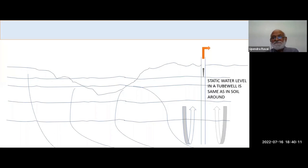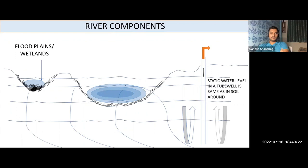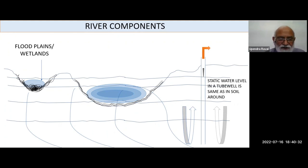We go to tube wells and other things. Floodplains, wetlands — all — we have sucked up that water. The steady water level in a tube well is the same in the soil all around. The more we suck water, the more it draws water and the soil water goes down. Topsoil is desiccated.